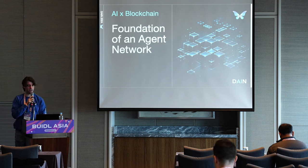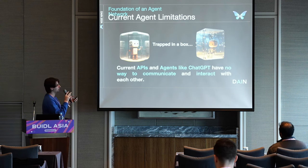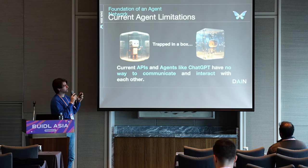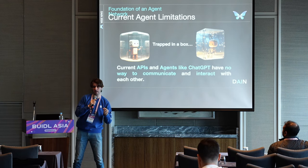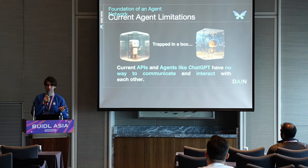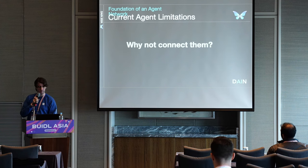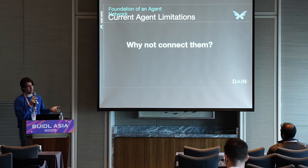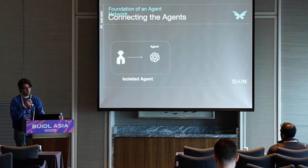Now let's go with the foundation of an agent network — why do we actually need one. Right now, agents are kind of trapped in a box; they are isolated. For example, when you interact with ChatGPT, it has no way to actually communicate with another agent — it's just an individual isolated agent. So that's actually a limitation for complexity in agents. Why not connect them? One can be specialized in something and the other in other things, so they can actually interact with each other.